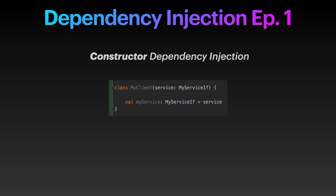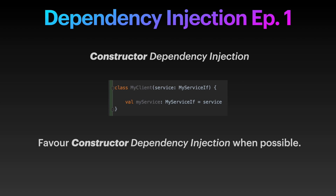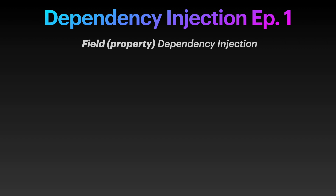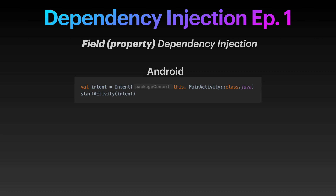Since it happens in the constructor, we are sure that we will have those dependencies available from the first millisecond of the object's creation. They can also be final. Here's a classic example. If constructor dependency injection is available as a choice, pick that one, since it's the safest and clearest. But not all classes can be instantiated by us. If you're an Android developer, you know that the framework has made the choice that you do not instantiate activities through their constructor, in contrary to iOS, where you invoke view controllers constructors yourself. This is a problem for constructor dependency injection — we cannot use it.